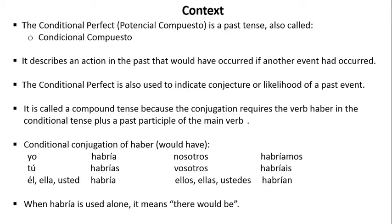The conditional conjugation of haber is as follows: yo habría (I would have), tú habrías (you would have), él, ella, usted habría, nosotros habríamos, vosotros habríais, ellos, ellas, ustedes habrían. When habría is used alone, it means there would be.